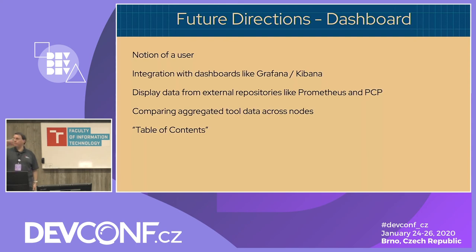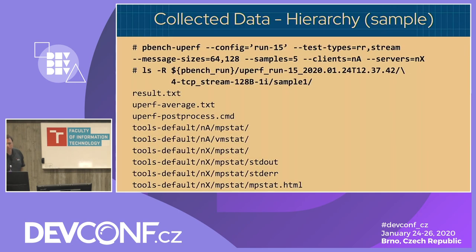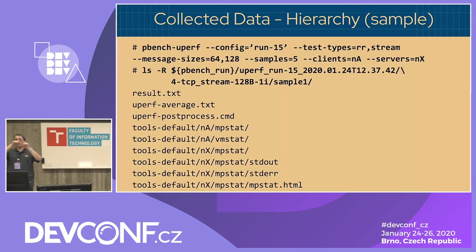We're working on aggregating tool data across nodes — if you have 20 nodes doing Uperf, we want to take the tool data and display the aggregate across all those nodes in your run comparisons. We also have a feature called Table of Contents that Anisha is working on. The data you collected in your hierarchy is dear to you because you spent a lot of time making runs. When there's a problem and you need to figure out why something's not working, you need to get back to that data. The Table of Contents lets you see the complete hierarchy of what was collected in your tarball and pick through it without having to unpack the whole tarball yourself.